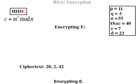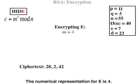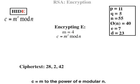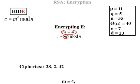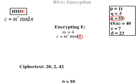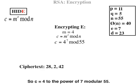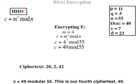Encrypting E: the numerical representation for E is 4. C equals M to the power of E mod N, where M equals 4, E equals 7, N equals 55. So C equals 4 to the power of 7 mod 55. C equals 49 mod 55. This is our fourth ciphertext: 49.